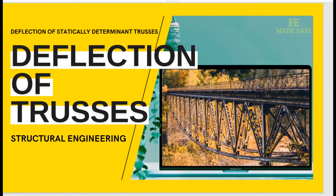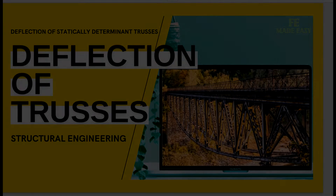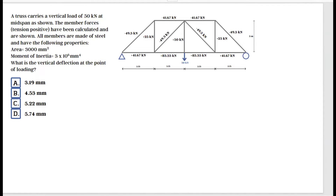Welcome back to another episode at FE Made Easy. Today we're going to talk about deflection of trusses. A truss carries a vertical load of 50 kilonewtons at mid-span as shown. The member forces, tension positive, have been calculated and are shown. All members are made of steel with area 3000 mm² and moment of inertia 3×10⁶ mm⁴. What is the vertical deflection at the point of loading?